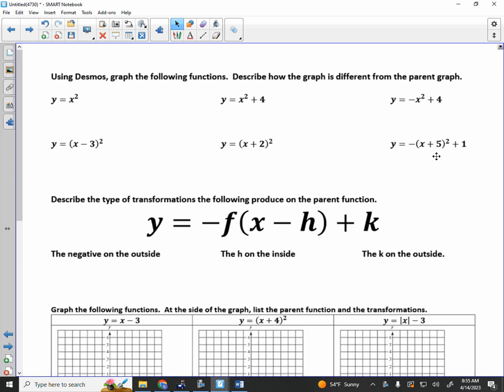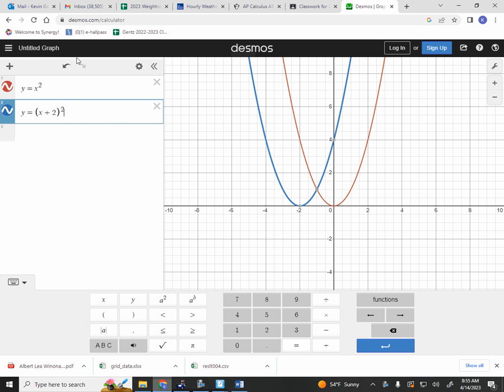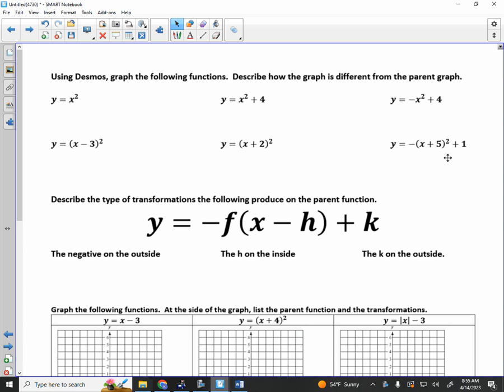This last one, I want you to take 20 seconds, talk to the person next to you or around you, and make a guess what's going to happen with this last one. Negative x plus 5 squared plus 1. Let's see what happens. As you notice, it is left 5 due to the plus 5. It is up 1 due to the plus 1. And then the negative on the outside makes it flip upside down.